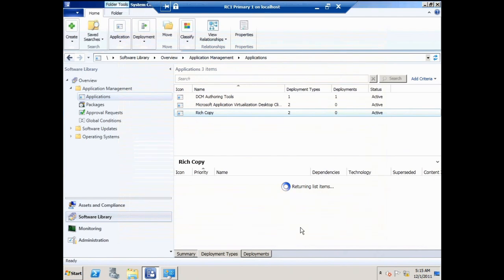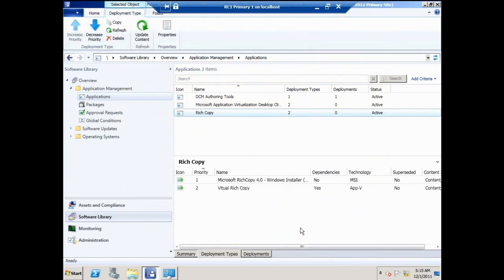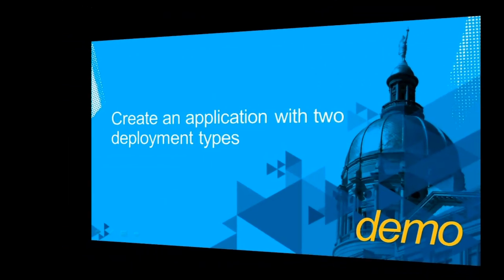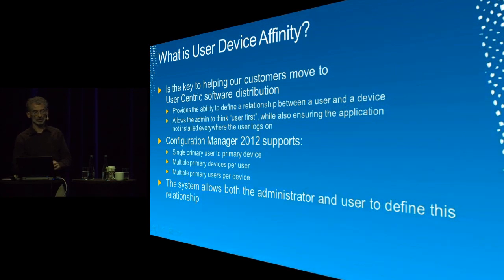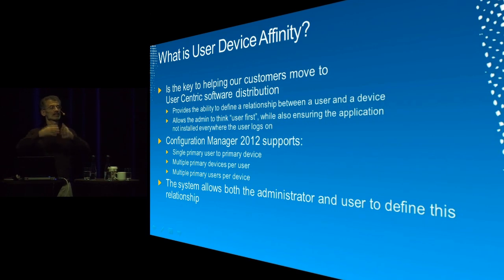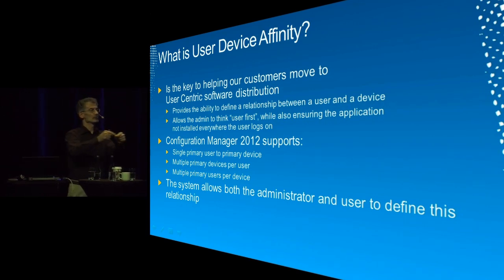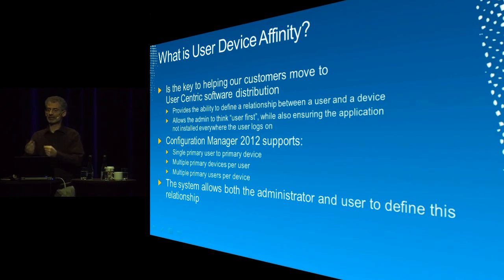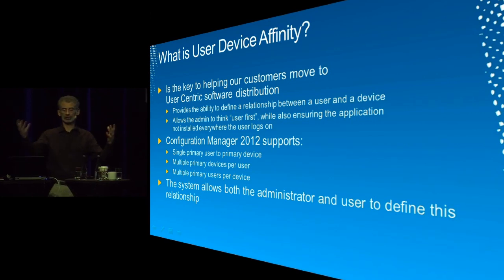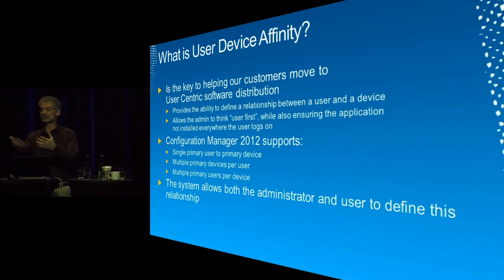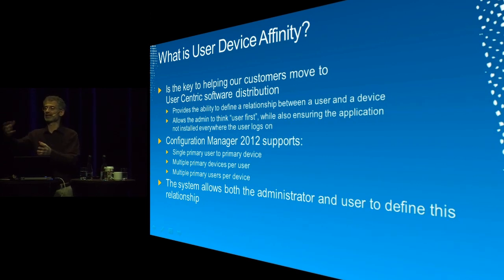I've created an application with two deployment types and configured the application catalog metadata. Now I want to deploy it to users and make sure the MSI only installs when the user is on their primary computer. I need to configure the user device affinity relationship — tying the user to the computer — which is the key to user-centric software delivery: getting applications to users where they need them in the proper format.